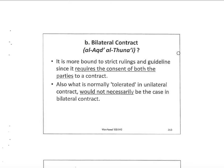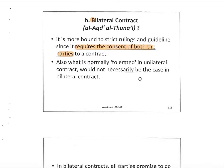Assalamualaikum warahmatullahi wabarakatuh. In this session we learn about bilateral contracts. The word 'bi' means two ways of a contract. Last time we learned about unilateral contracts — one way. This is a two-way contract, so it requires the consent of both parties, meaning there must be two parties involved. It is very strict in bilateral — you must have a party that offers and a party that accepts, concerning the proposal and consent about the proposal.